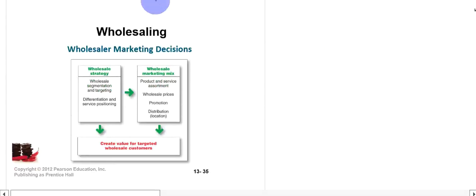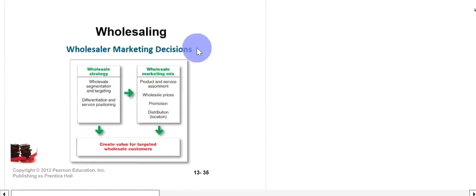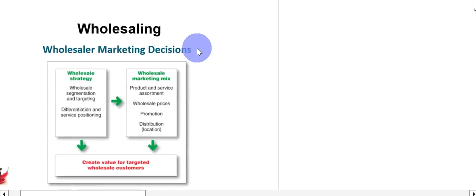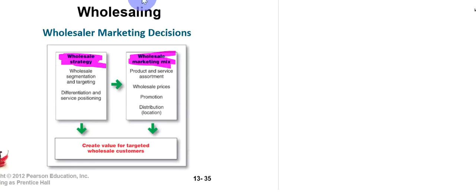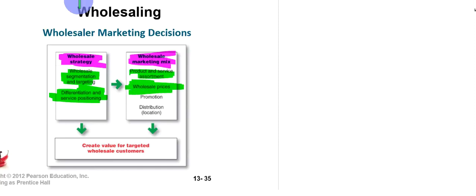How do companies make marketing decisions in wholesaling? First, we look at wholesale strategy — where wholesale segmentation and targeting is done. Then the wholesaler makes policies regarding differentiation and positioning. After that comes the wholesale marketing mix, where the four P's apply: assortments are decided, wholesale prices are set, then they promote the product, distribute it, and transport it to the buyers.